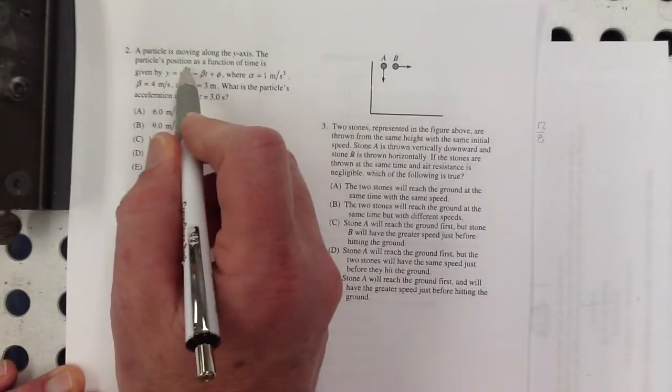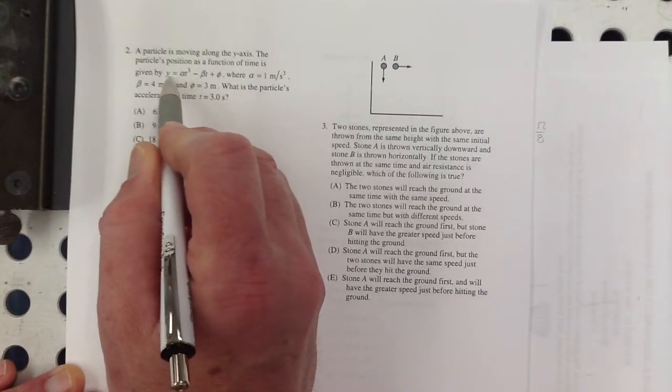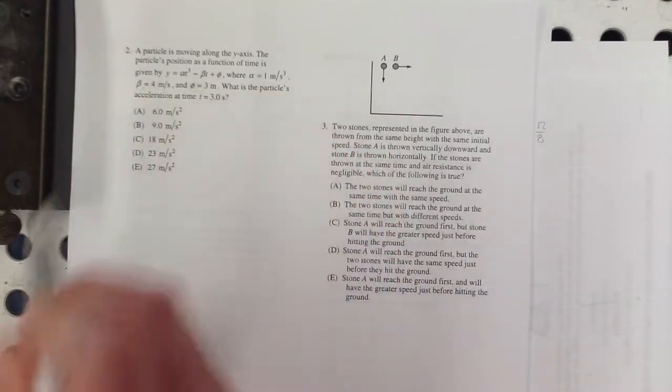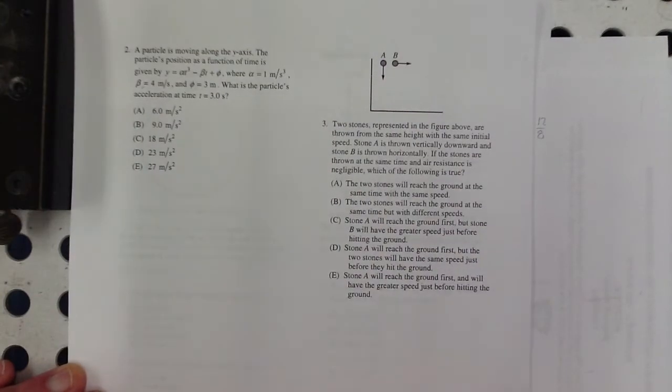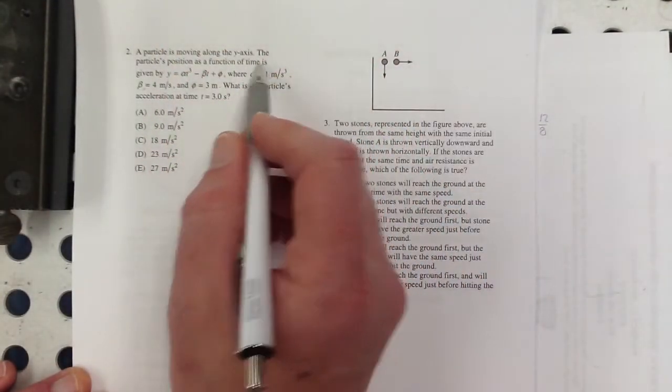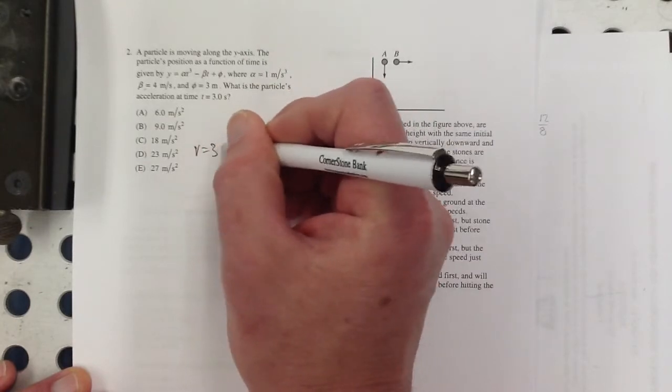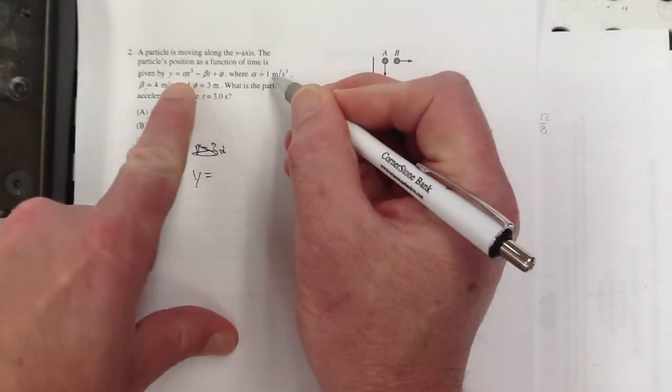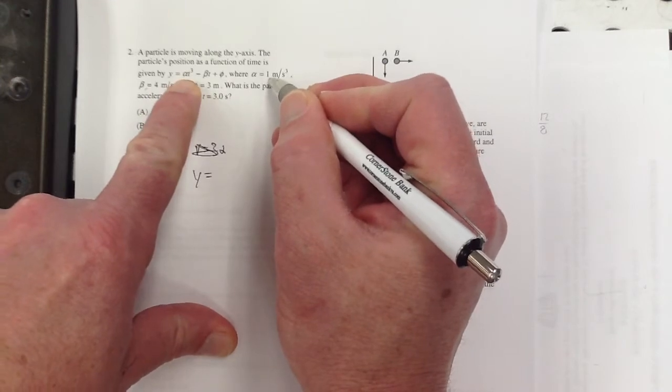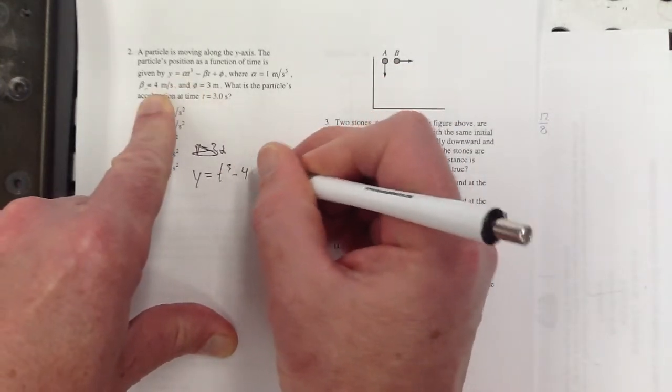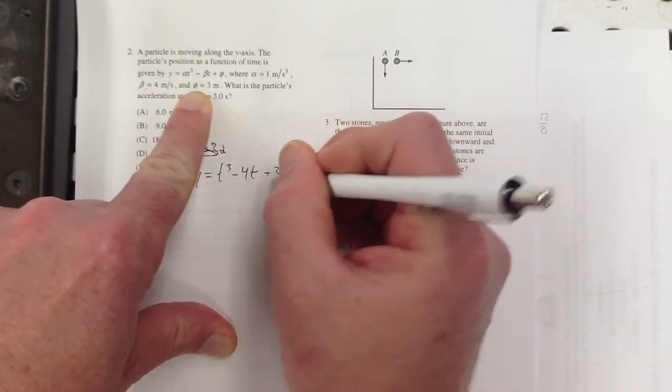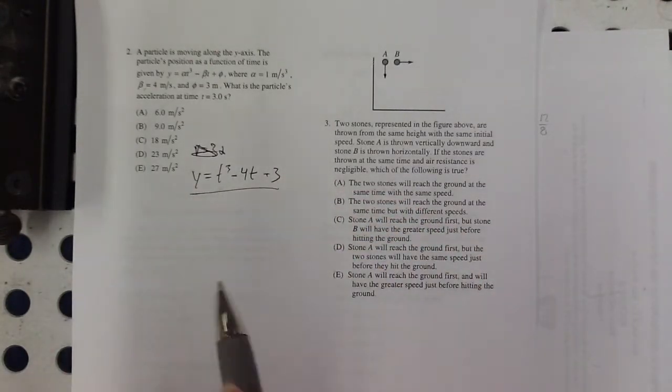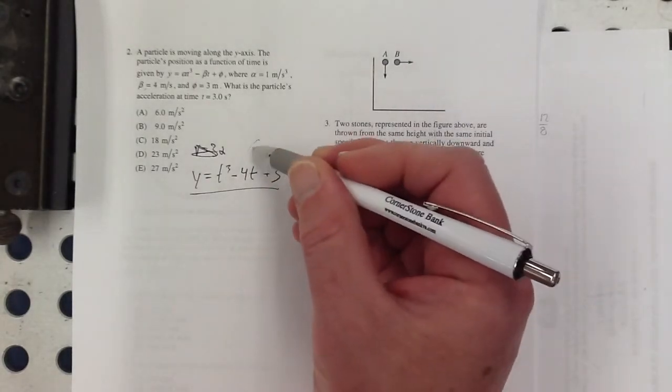Particles moving along the y-axis. The particle's position as a function of time is given by y equals some constant times t cubed, some other constant times t, plus some other constant, and there's the constants. What's the particle's acceleration? This is just a very basic calculus question. That's its position. I'm going to rewrite this.